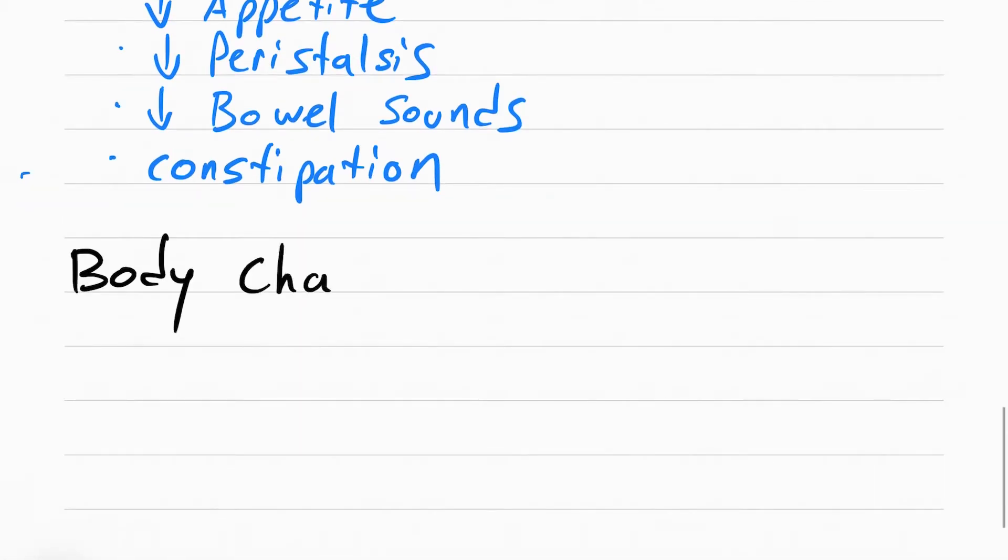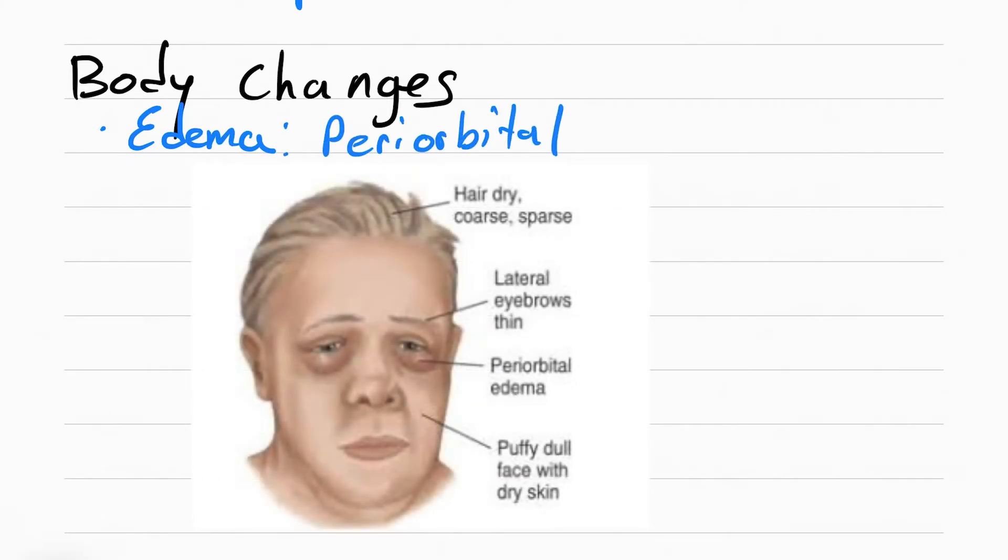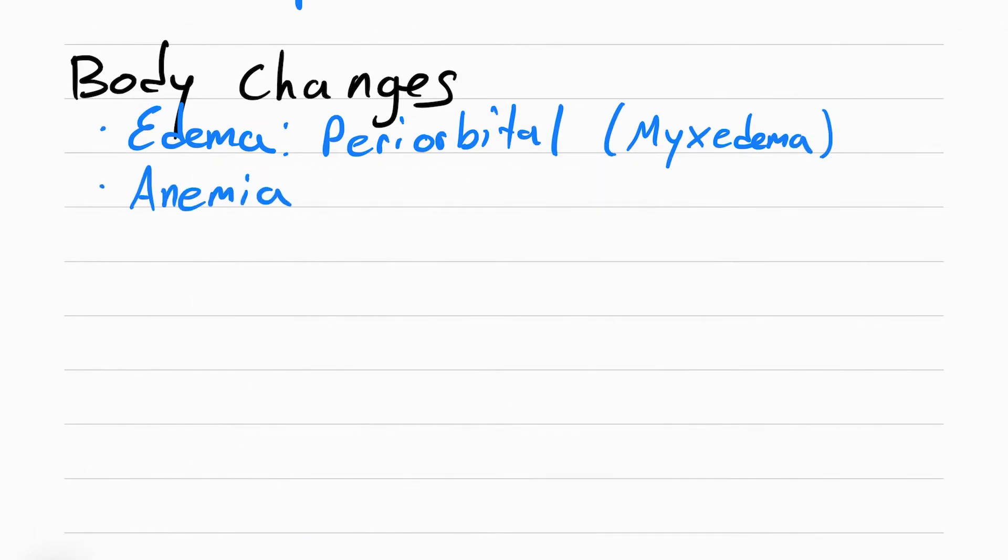They also have body changes that happen. They get edema, specifically periorbital, which means around the eyes. There's puffiness—sometimes this is called myxedema. They also get anemia because there's a decrease in oxygen demand in the body, so the body makes less red blood cells. The patient can also have coarse hair and they can start losing it too, and they can have brittle nails and hoarseness, which means raspy voice.